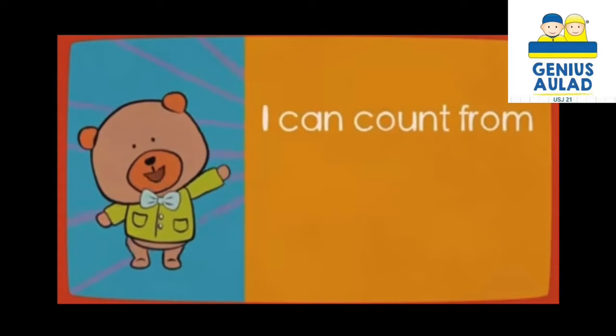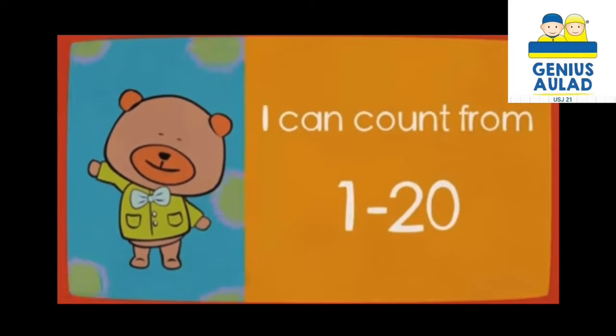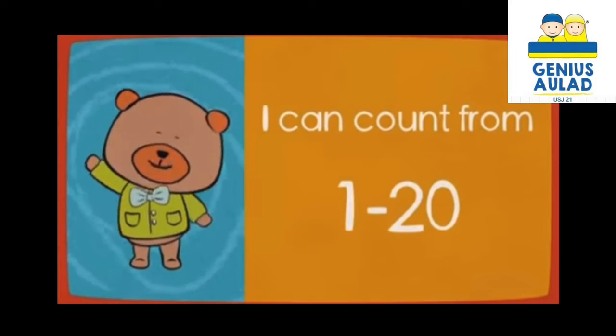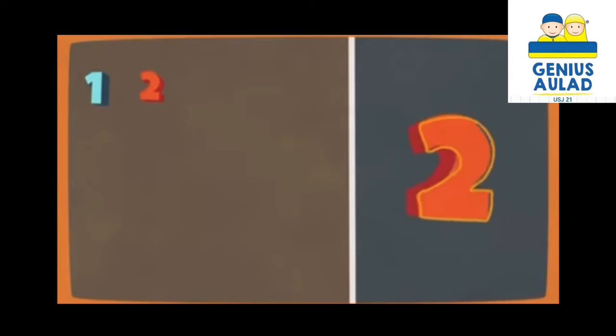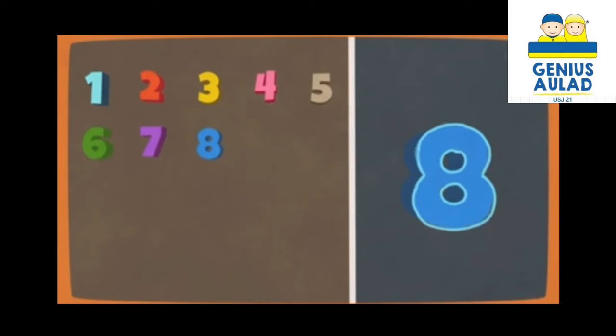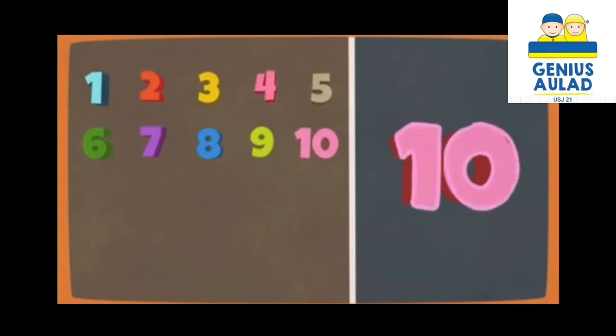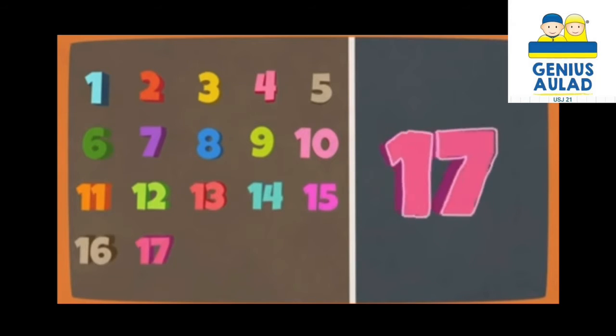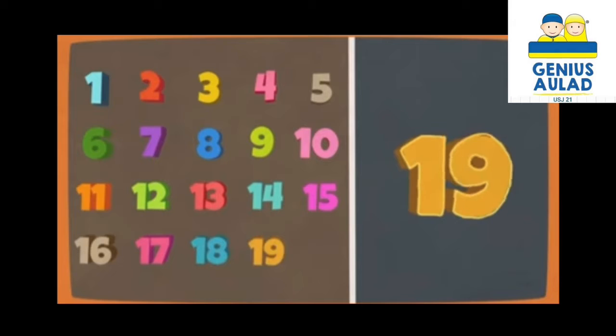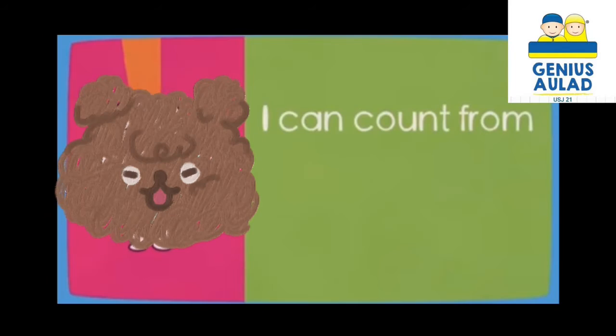I can count from 1 to 20. I can count from 1 to 20: 1, 2, 3, 4, 5, 6, 7, 8, 9, 10, 11, 12, 13, 14, 15, 16, 17, 18, 19, 20.